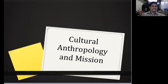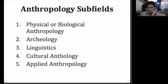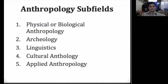Anthropology has five subfields. Number one: physical or biological anthropology. Number two: archaeology. Number three: linguistics. Number four: cultural anthropology. Number five: applied anthropology. Physical or biological anthropology studies human origins and is controversial for creationists because of its evolutionary approach. Archaeology is useful for the roots of contemporary cultures and the multiple cultures of biblical times.